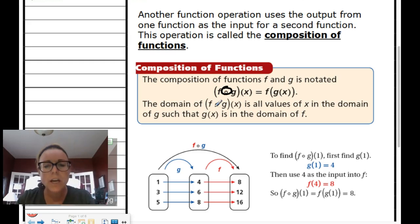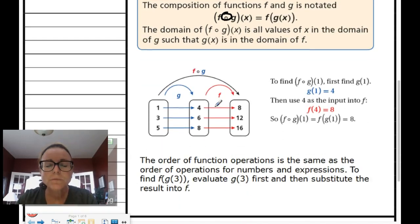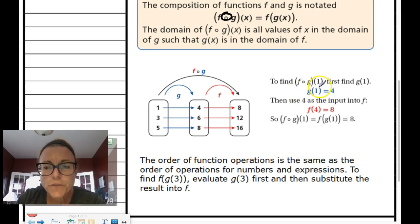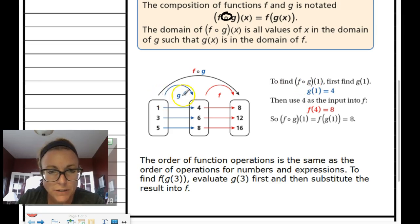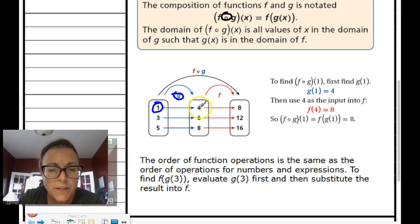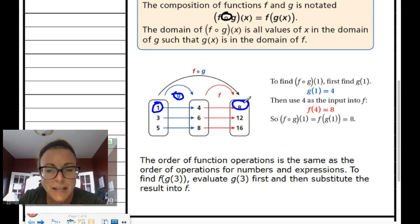Here's a little example: to find f of g of 1, we first find g of 1. We go to the g function, look when x equals 1, and the output is 4. That output is then the input into the f function, which generates the final answer of 8. That's exactly what we're going to do today.